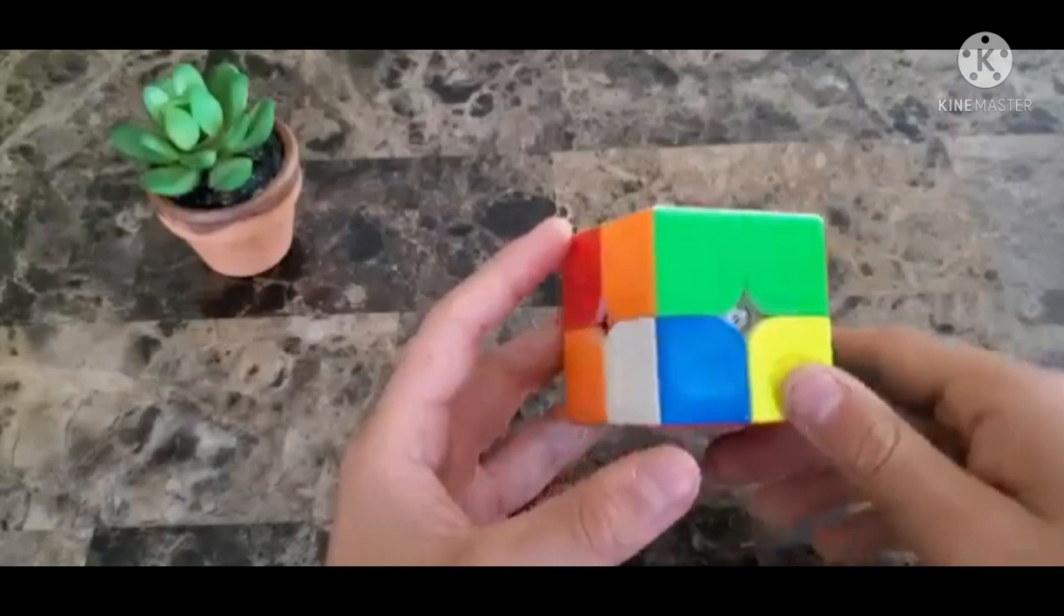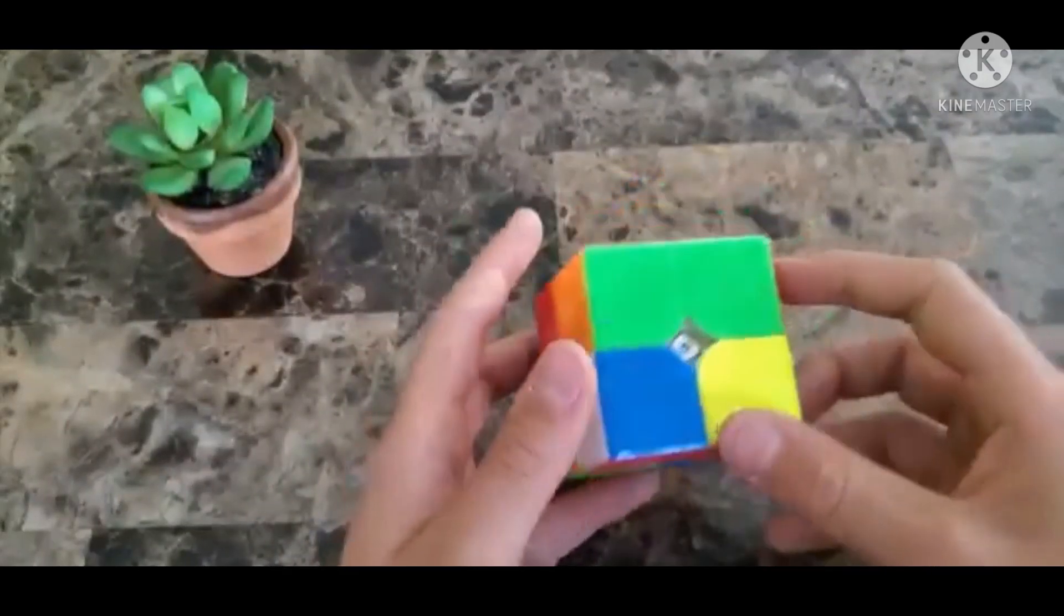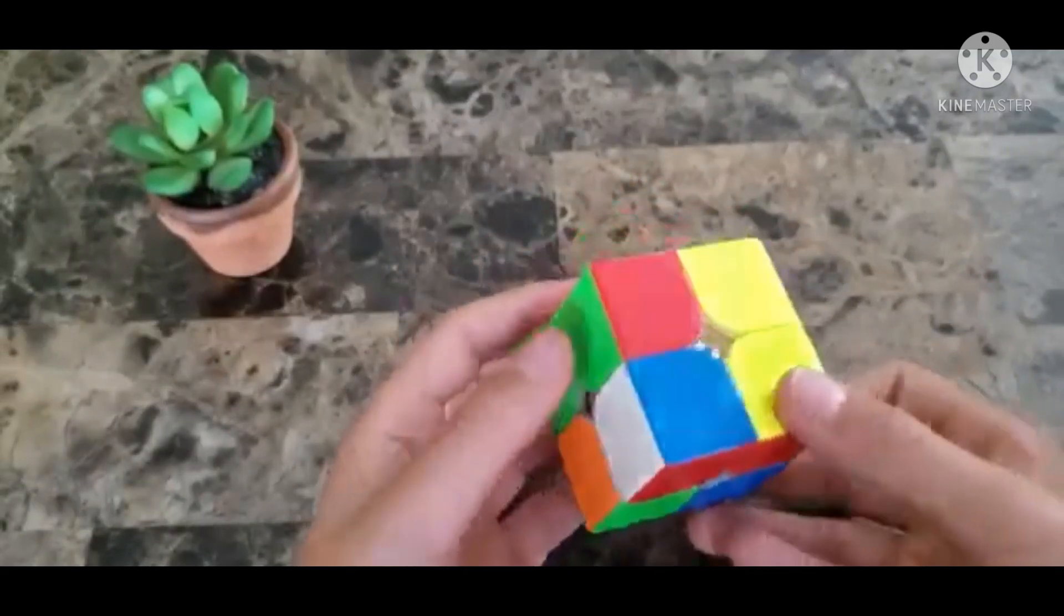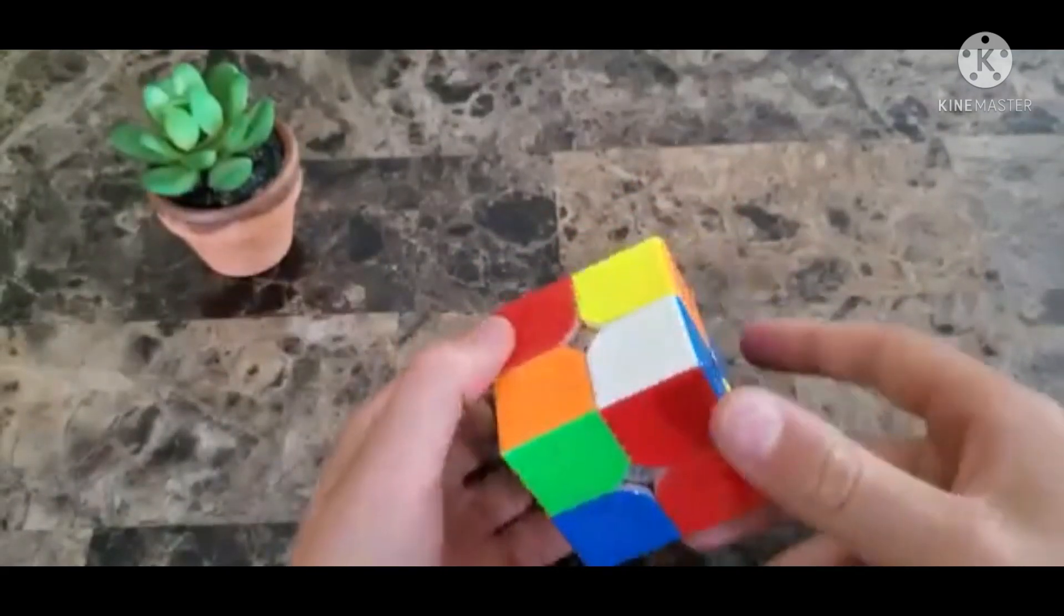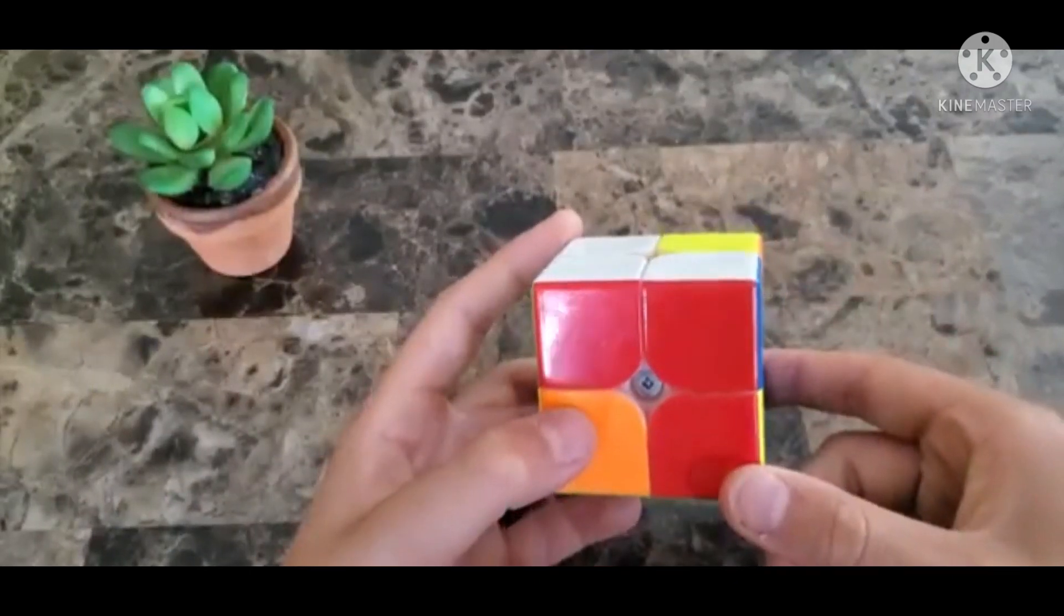Now next we're gonna want to just find any other white corner. So we have this one, we're gonna move it until it's under the red piece because this has red and then we're gonna move it up just like that.